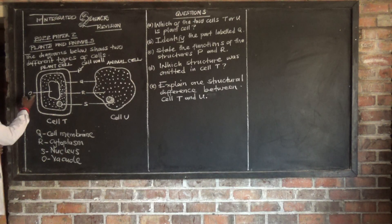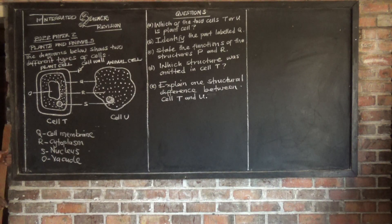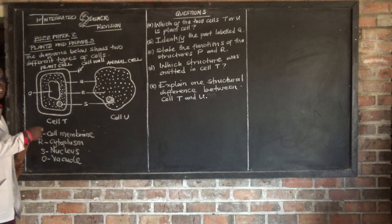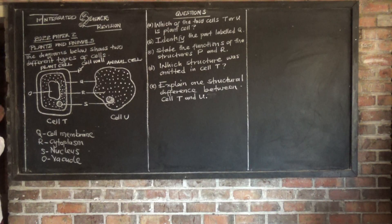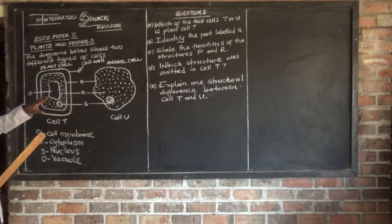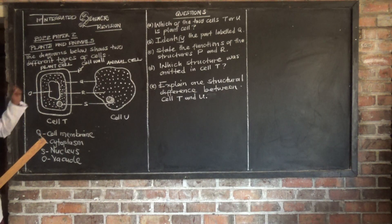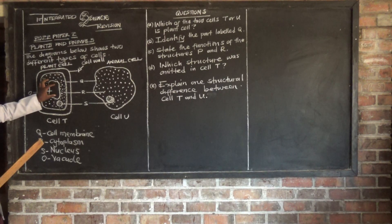Then we have O, which is our vacuole. This one contains cell sap solutions. So in the vacuole, this is where you can find cell sap solution.